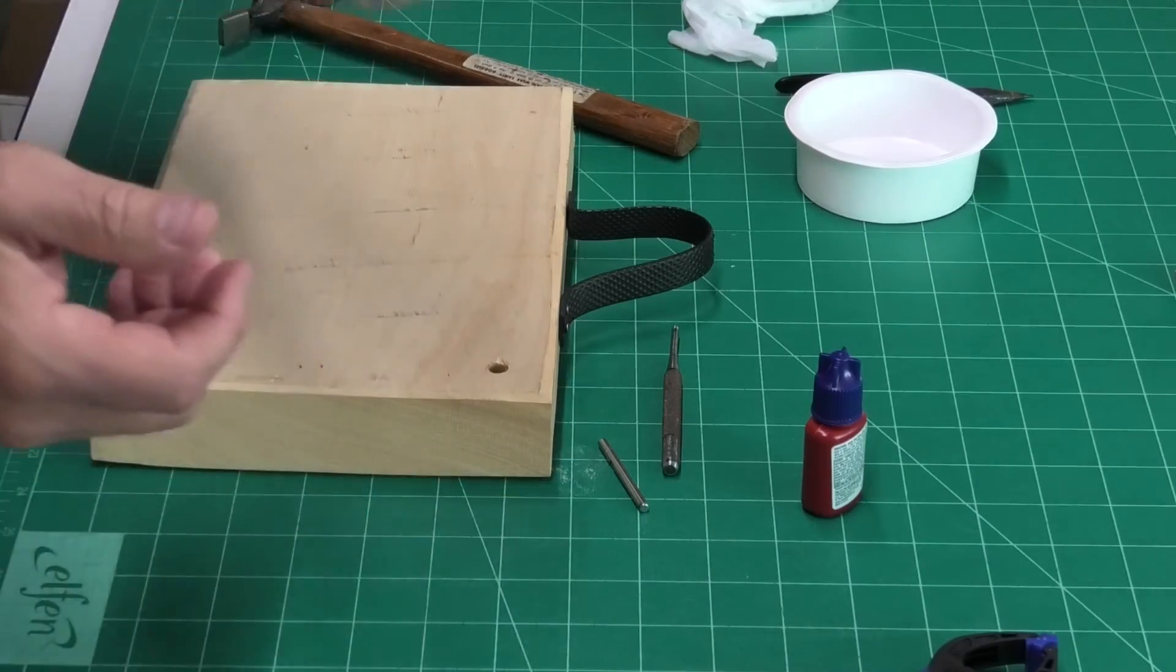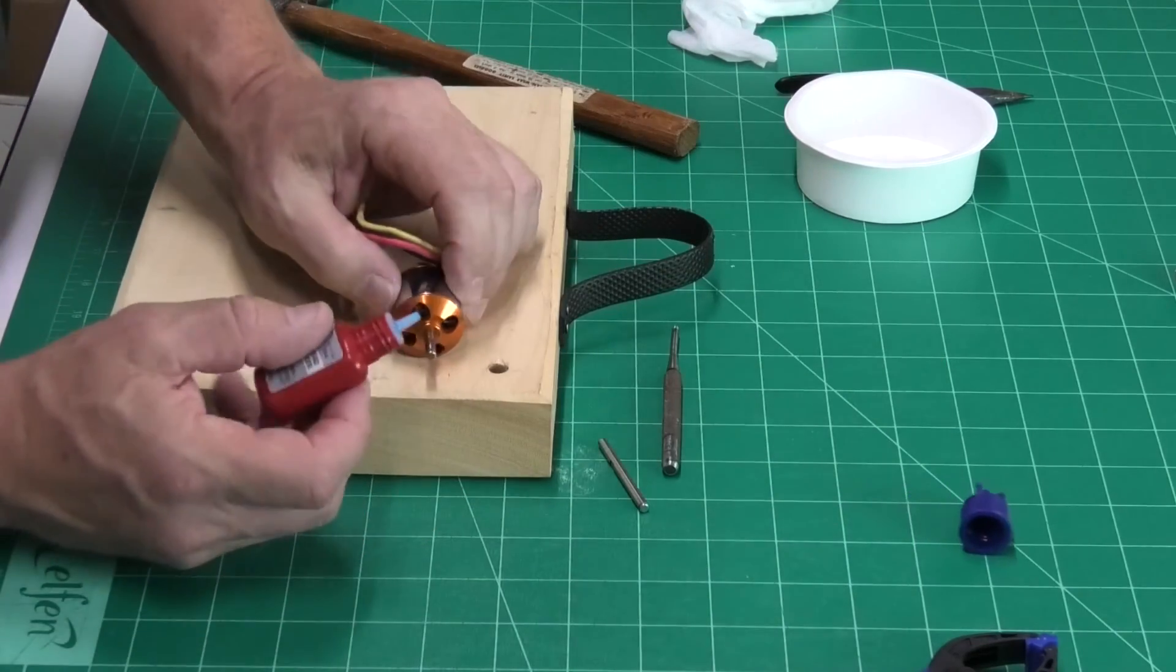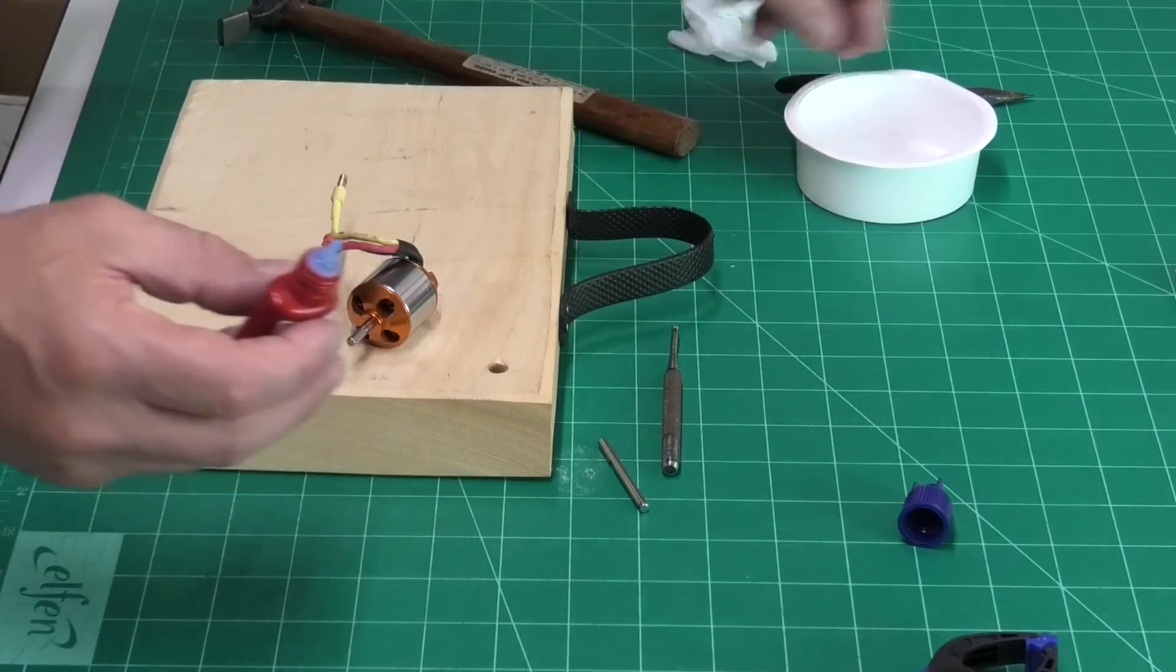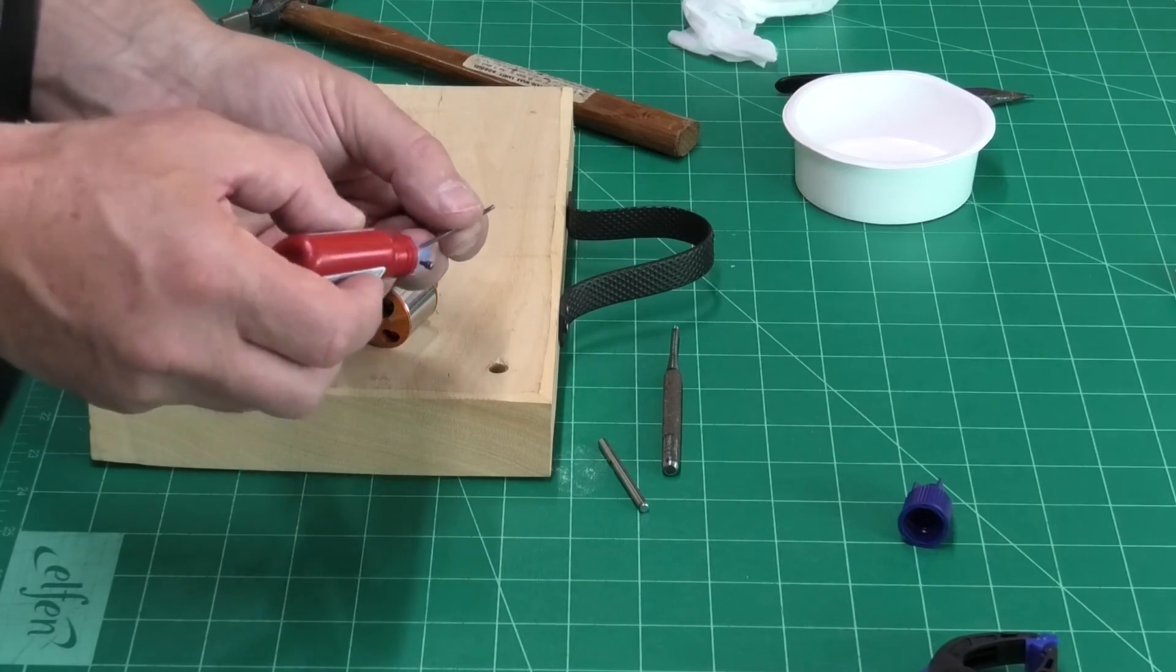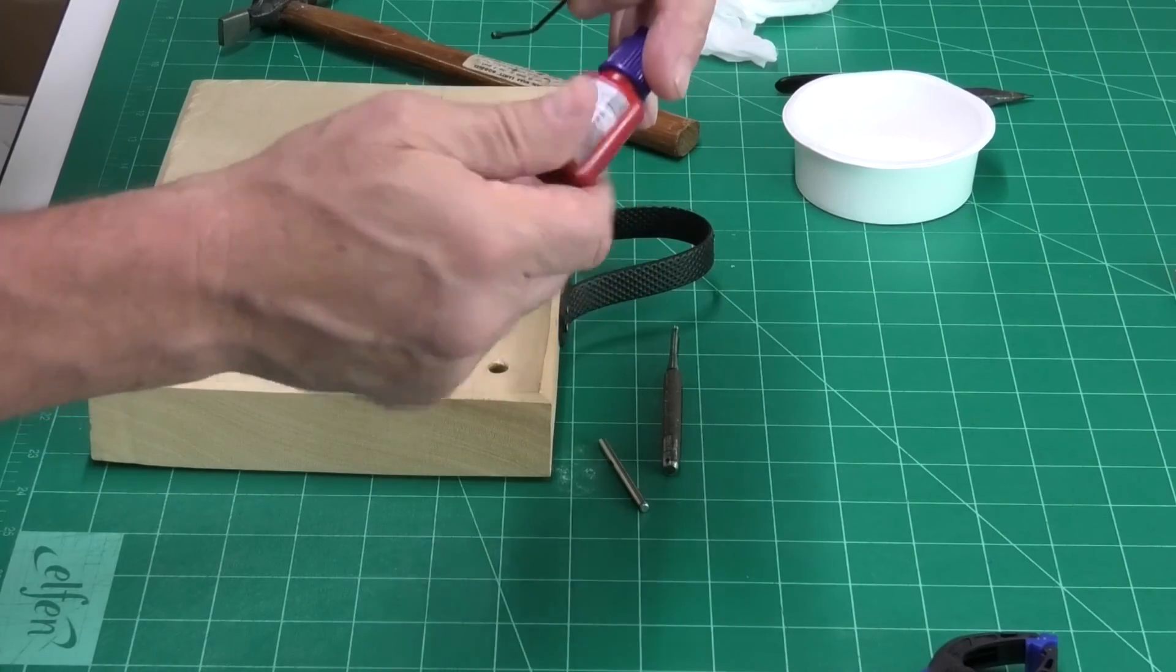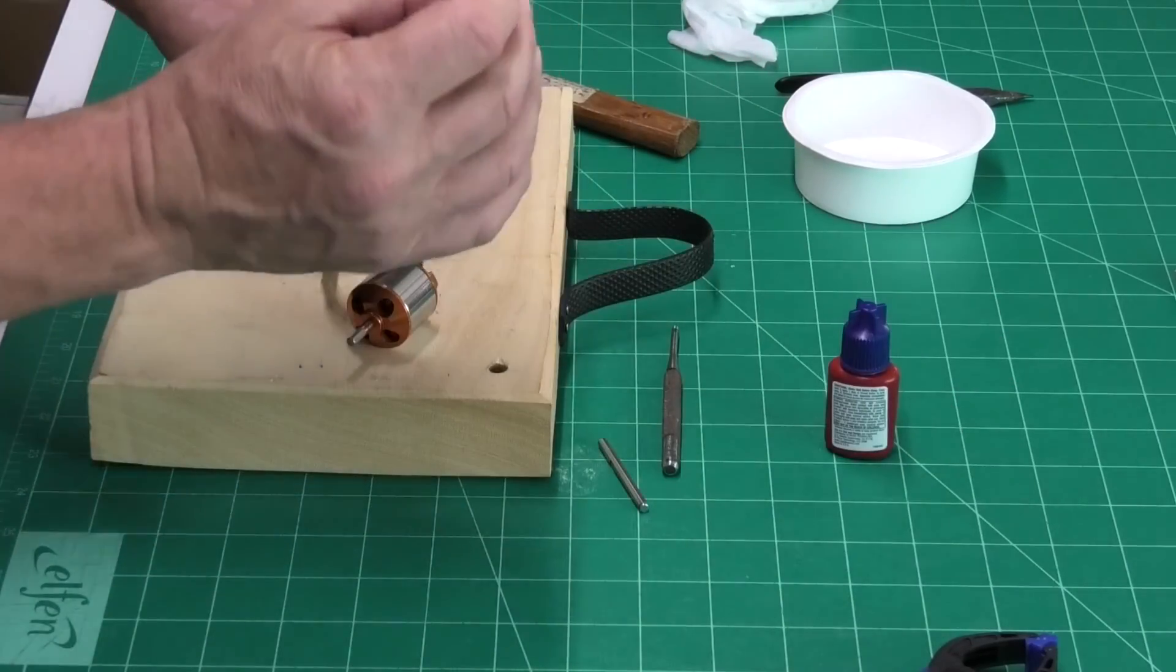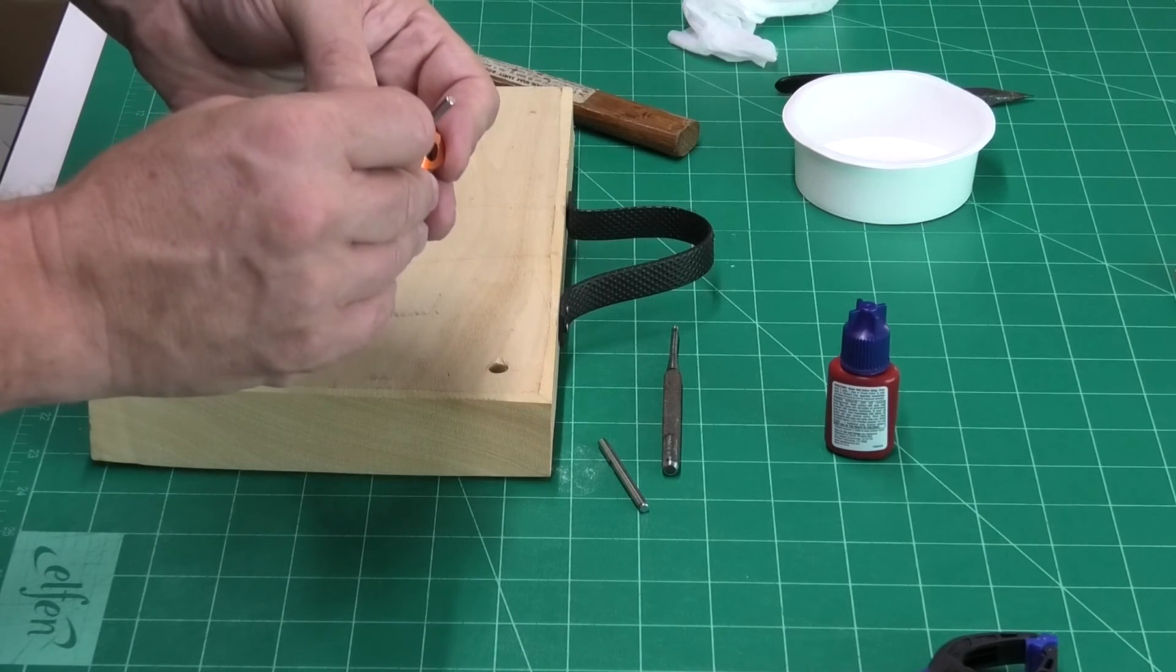Okay, so let's put a little bit of thread lock on and we'll put the grub screw back in. Just a little bit on the hole itself. And just a little bit on the grub screw. There we go. Not too much. This is a thread lock that you don't need to heat apparently, I believe. You can just do it with a little bit of pressure.